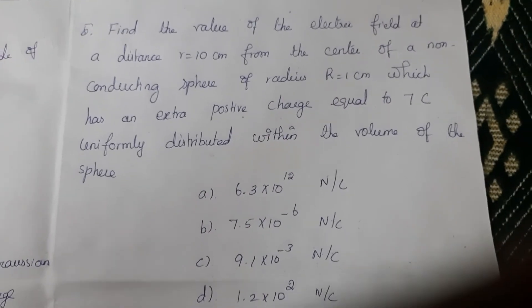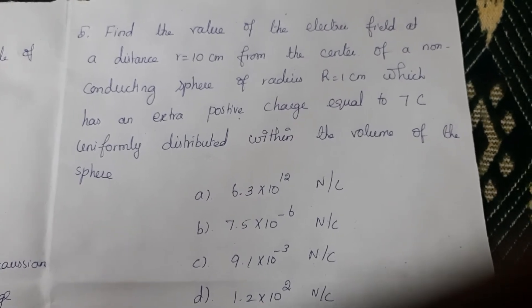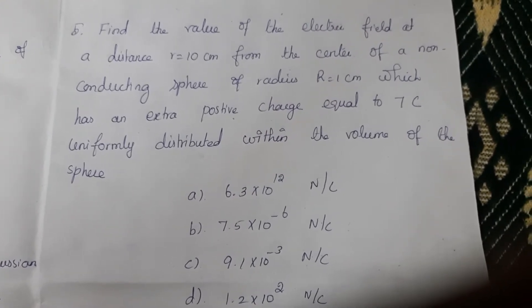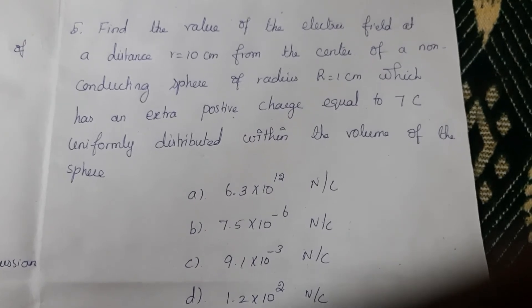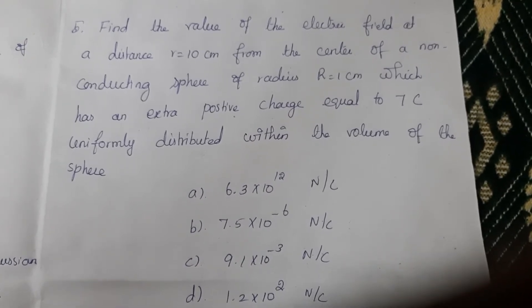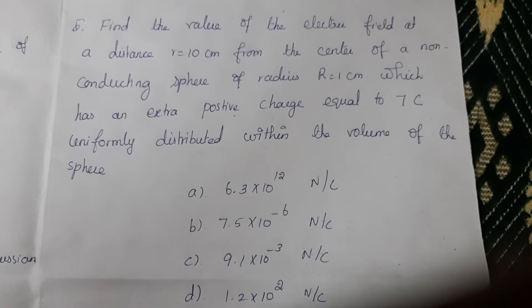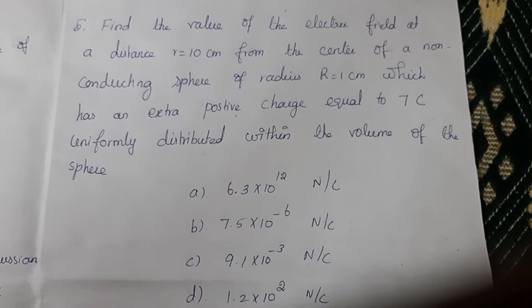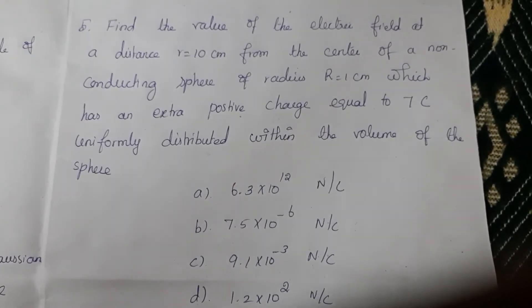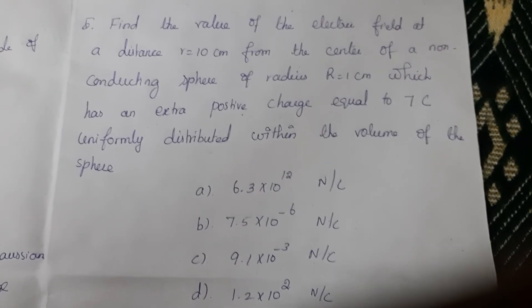Fifth question: Find the value of the electric field at a distance r = 10 centimeter from the center of a non-conducting sphere of radius R = 1 centimeter which has an extra positive charge equal to 7 coulomb uniformly distributed within the volume of the sphere.